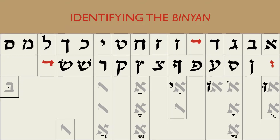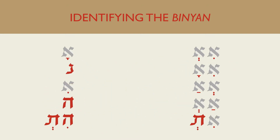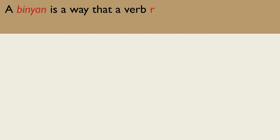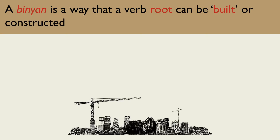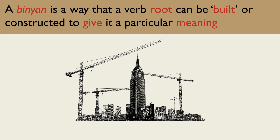The Hebrew word Binyan means building or construction. In Biblical Hebrew grammar, a Binyan is a way that a verb root can be built or constructed to give it a particular meaning. This video will show you how to identify the Binyan of a verb in one of the five most common Binyanim.